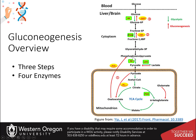To re-convert pyruvate back into phosphoenolpyruvate, pyruvate must first be transported to the matrix of the mitochondria, where it can be converted into the four-carbon molecule oxaloacetate. Oxaloacetate can then be transported back into the cytosol, where it can be converted into the three-carbon molecule phosphoenolpyruvate. If you count transporting the oxaloacetate out of the mitochondria, three enzymes are required for this process.